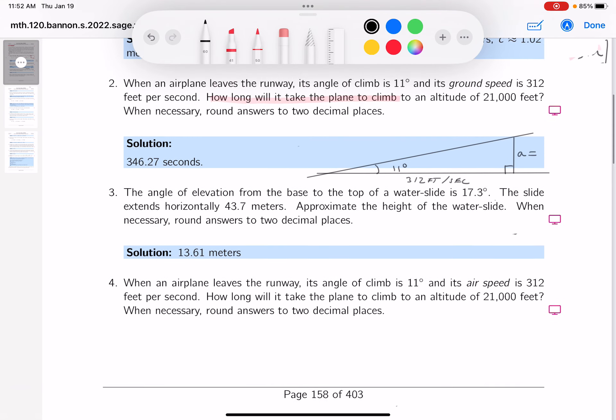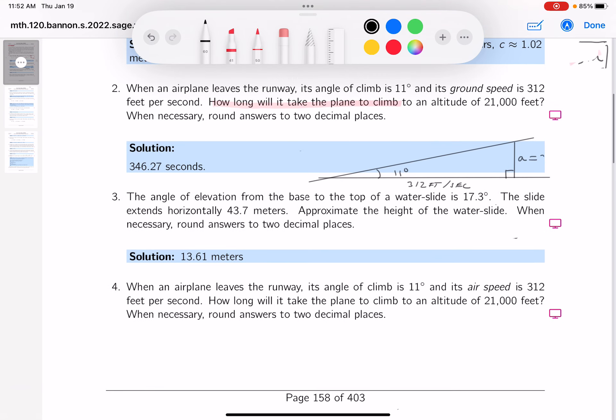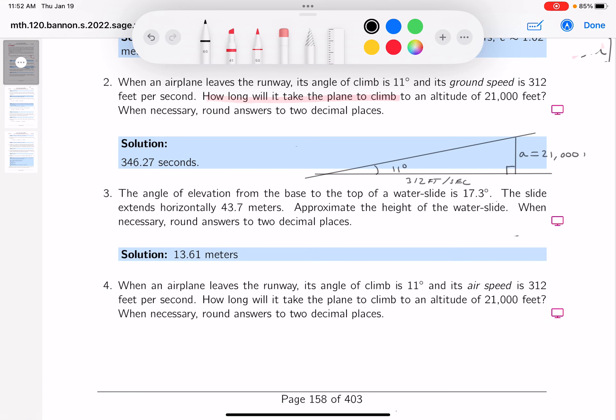And what's A going to be? Well, A is going to be 21,000 feet. I'm going to start talking about what this dimension is on the ground. And the dimension on the ground has to do with time. And if it's going 300 feet per second, I know this distance is related to the time.